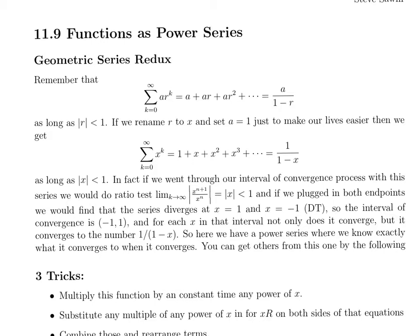So I want to remind you that we had this lovely formula for a geometric series. The geometric series, which is sum from k equals 0 to infinity of a r to the k, which just means a plus ar plus ar squared. We could actually figure out exactly what that was equal to. That sum converged, and it converged to the number a over 1 minus r, as long as r is absolute value less than 1.